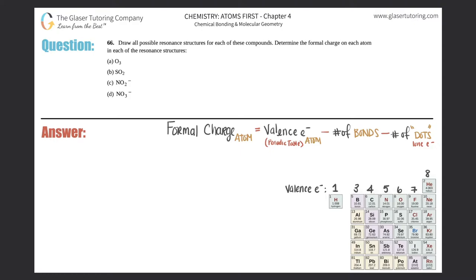Question 66: draw all possible resonance structures for each of these compounds, determine the formal charge on each atom in each of the resonance structures — parts a through d. We've actually done all four of these in previous questions as far as drawing the resonance structures. If you want to know how to draw these, go back to question number 55 in this chapter, or scroll back on the playlist starting at number 50.